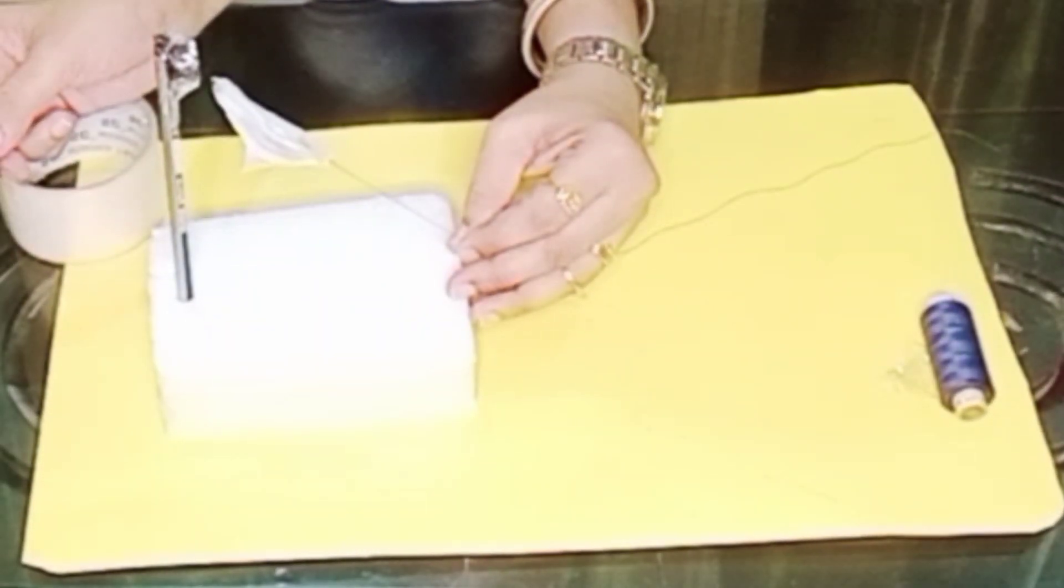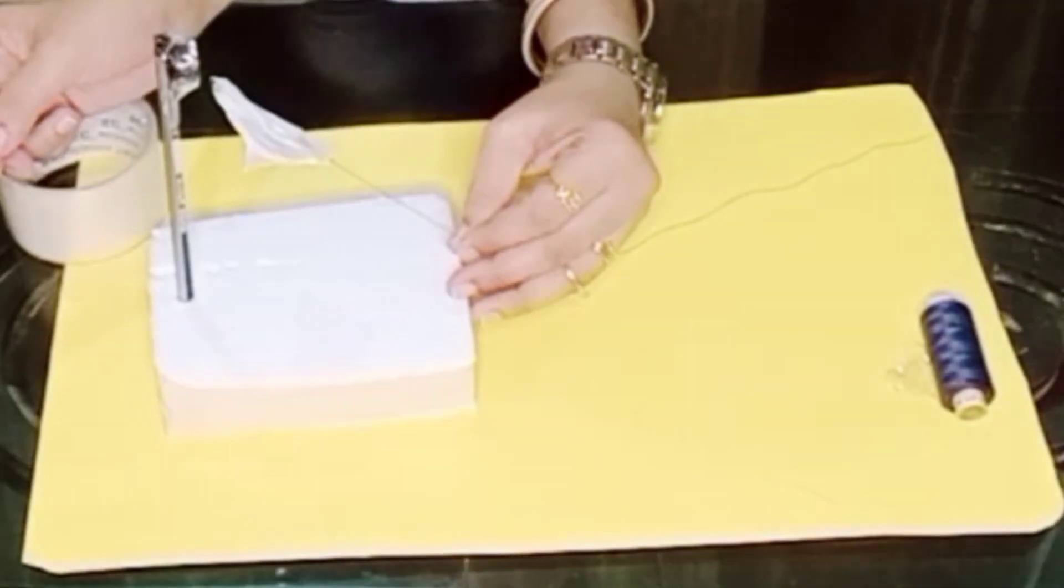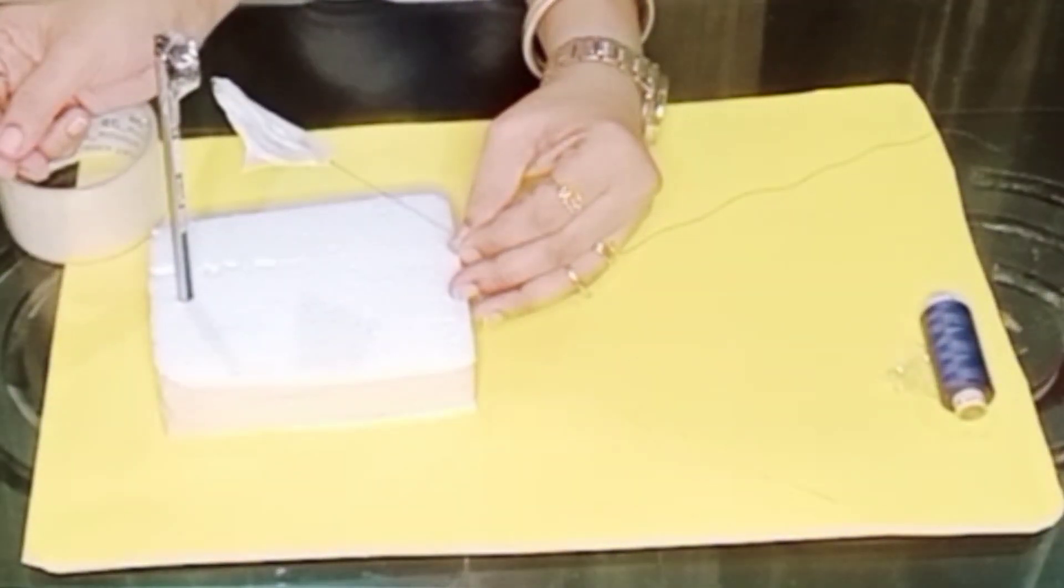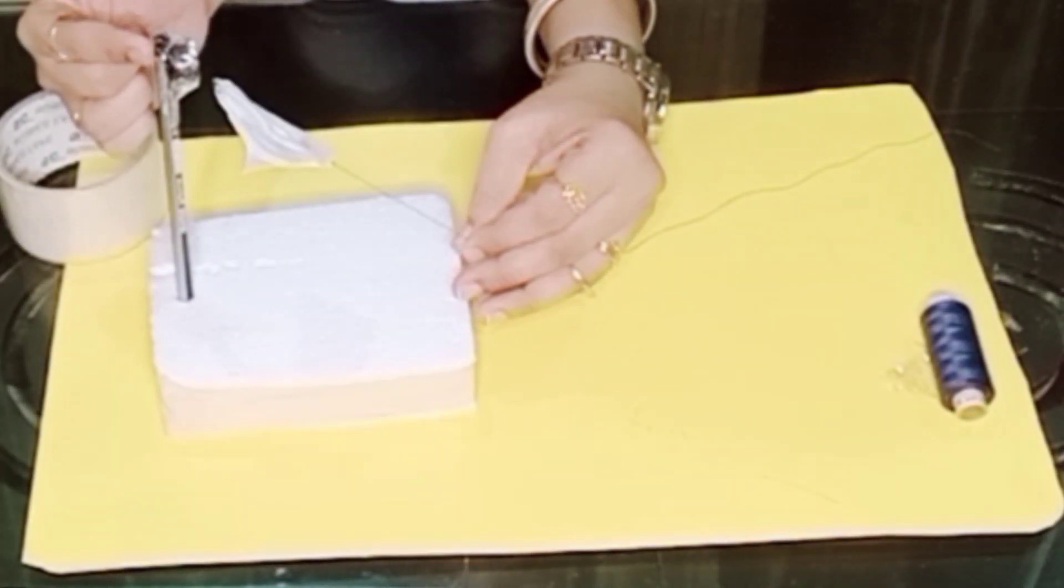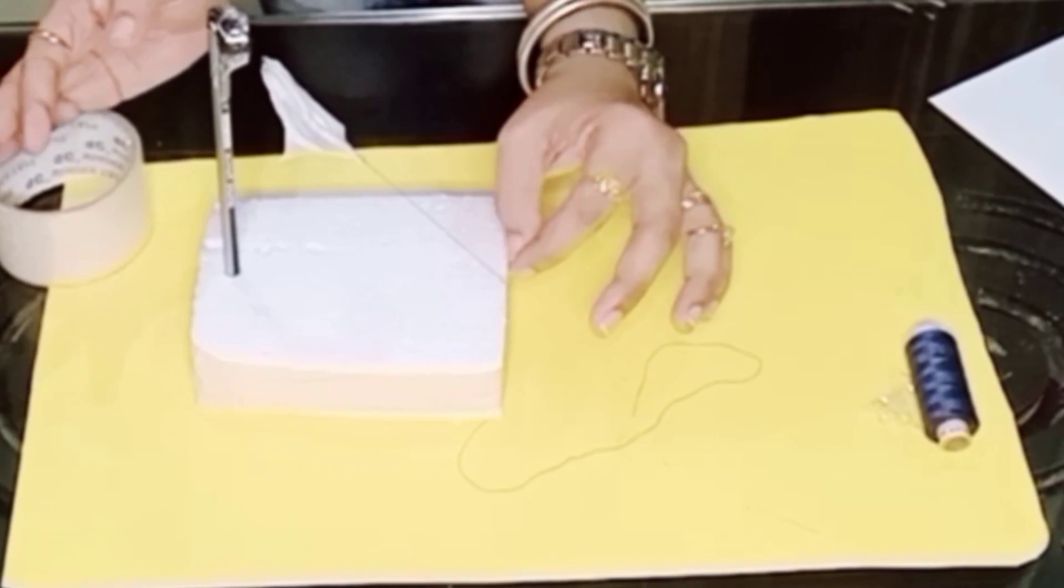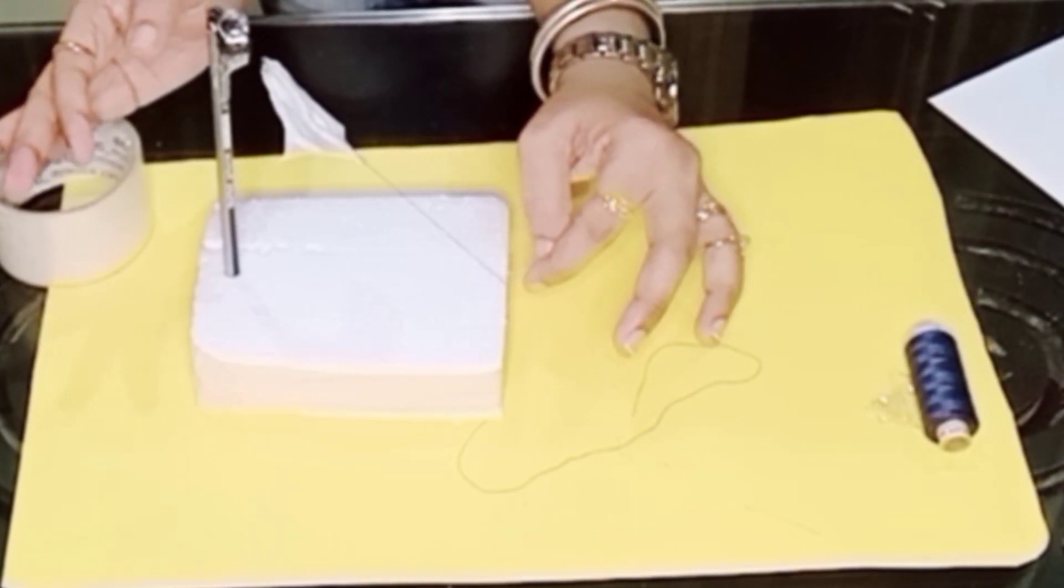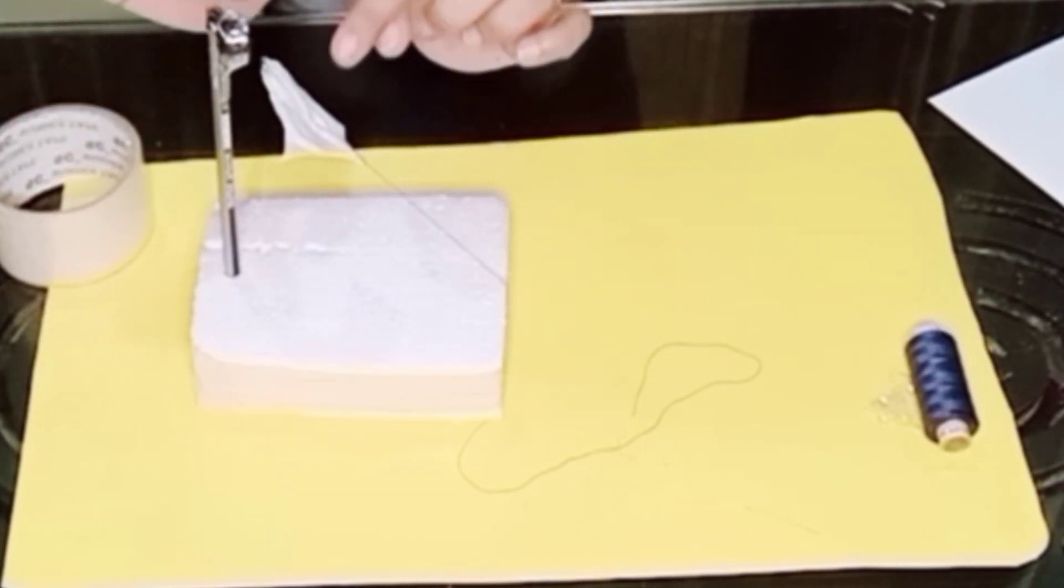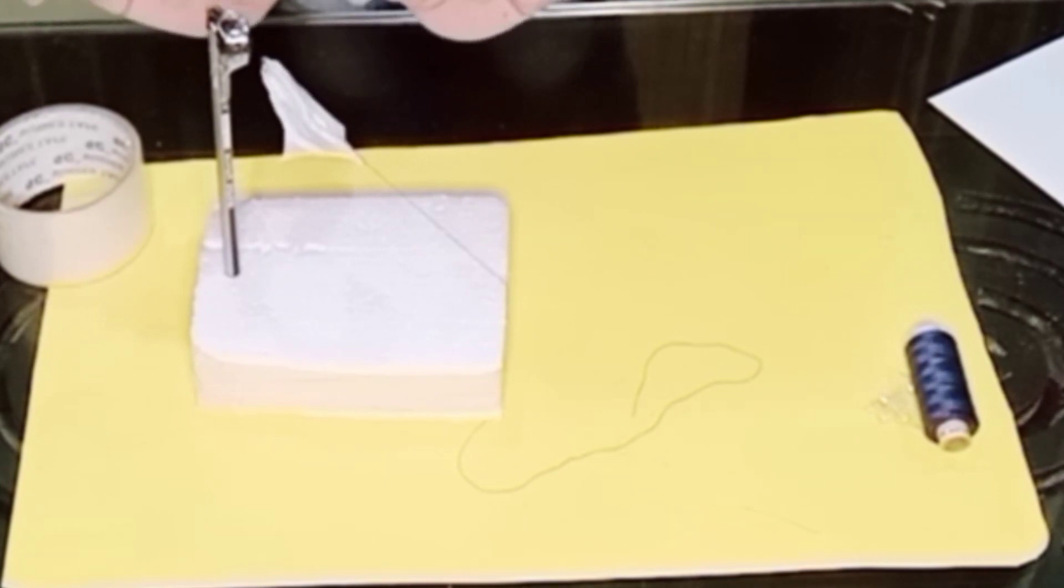So now I'm going to adjust my thread accordingly so that it keeps on flying for a more period of time. I have just adjusted my thread already and now you can see my kite is flying.